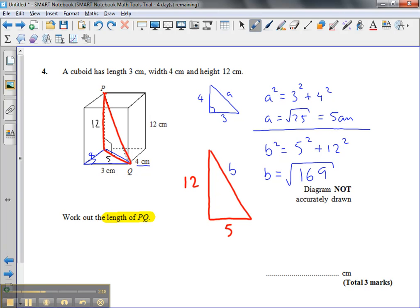b is equal to the square root of 169. So b must be the length P to Q, which is the hypotenuse here, which we've labeled here in this diagram, must be 13 centimeters.